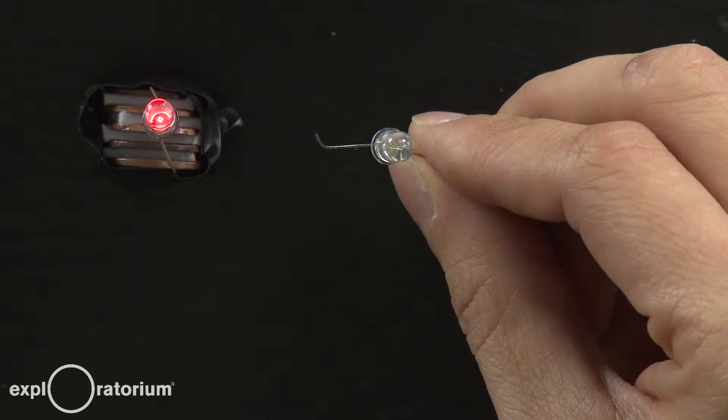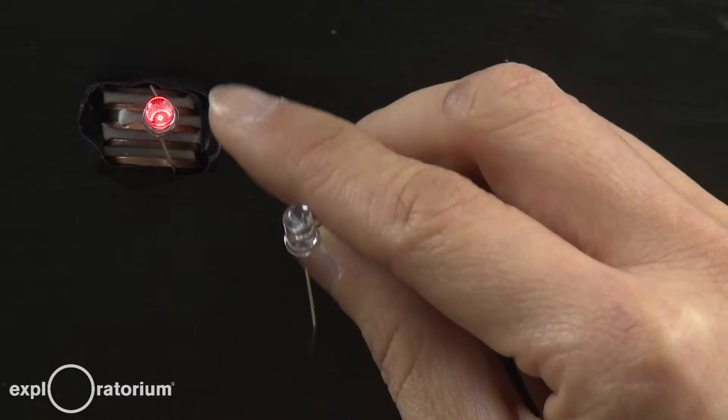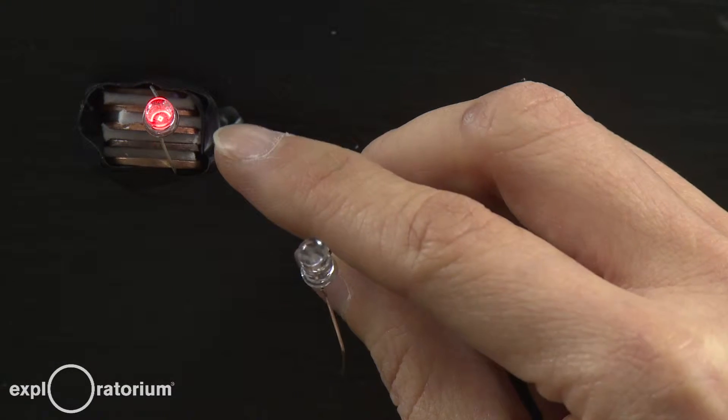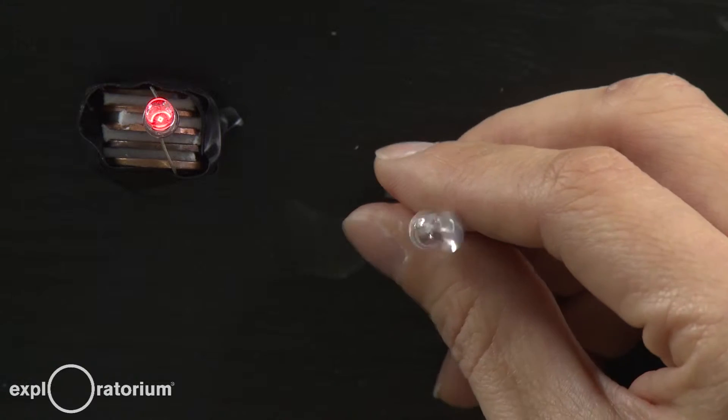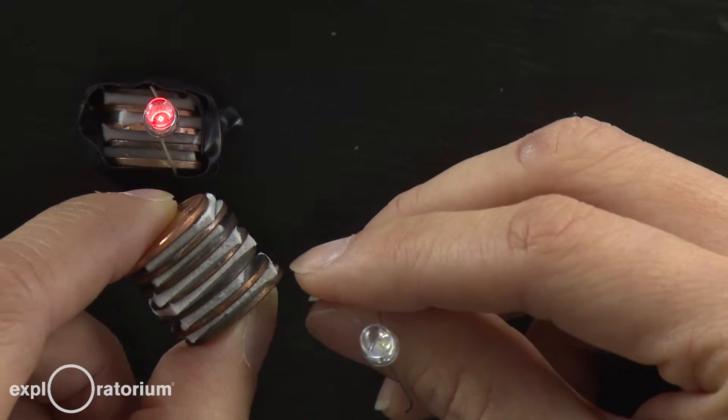In order to light the blue LED, I need to construct a battery that generates more power. Whereas a four cell battery was enough to light the red one, I needed to make a stronger battery for my blue LED. So I made a battery made of six cells.